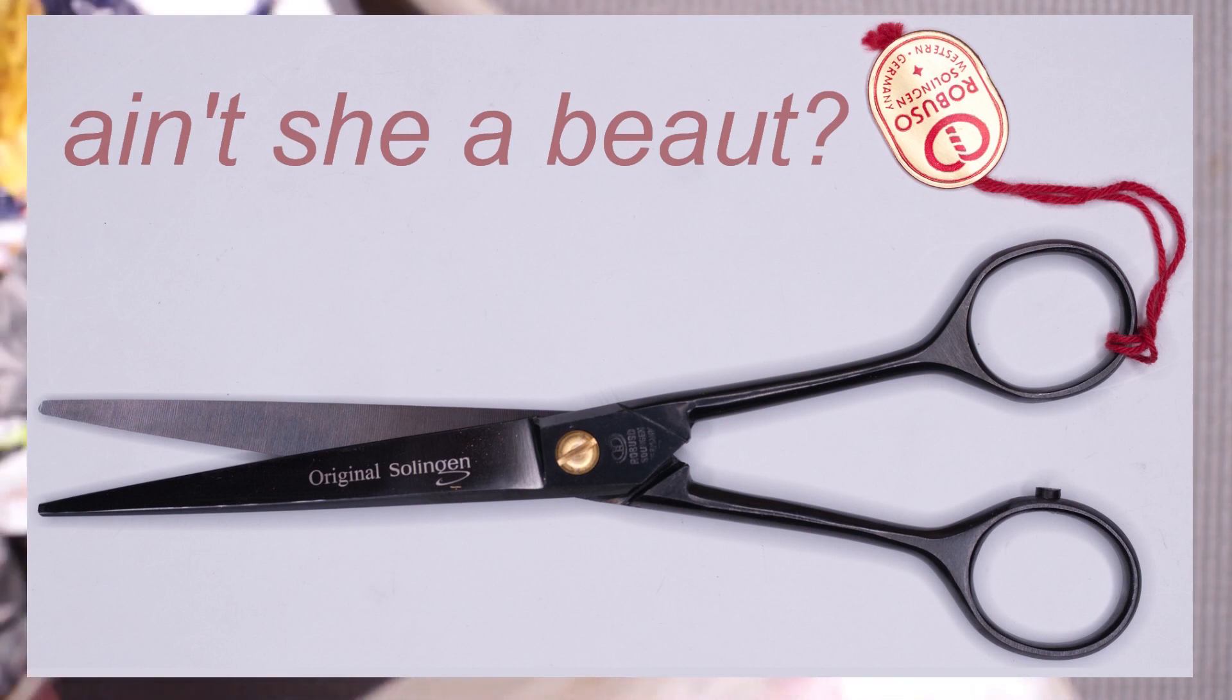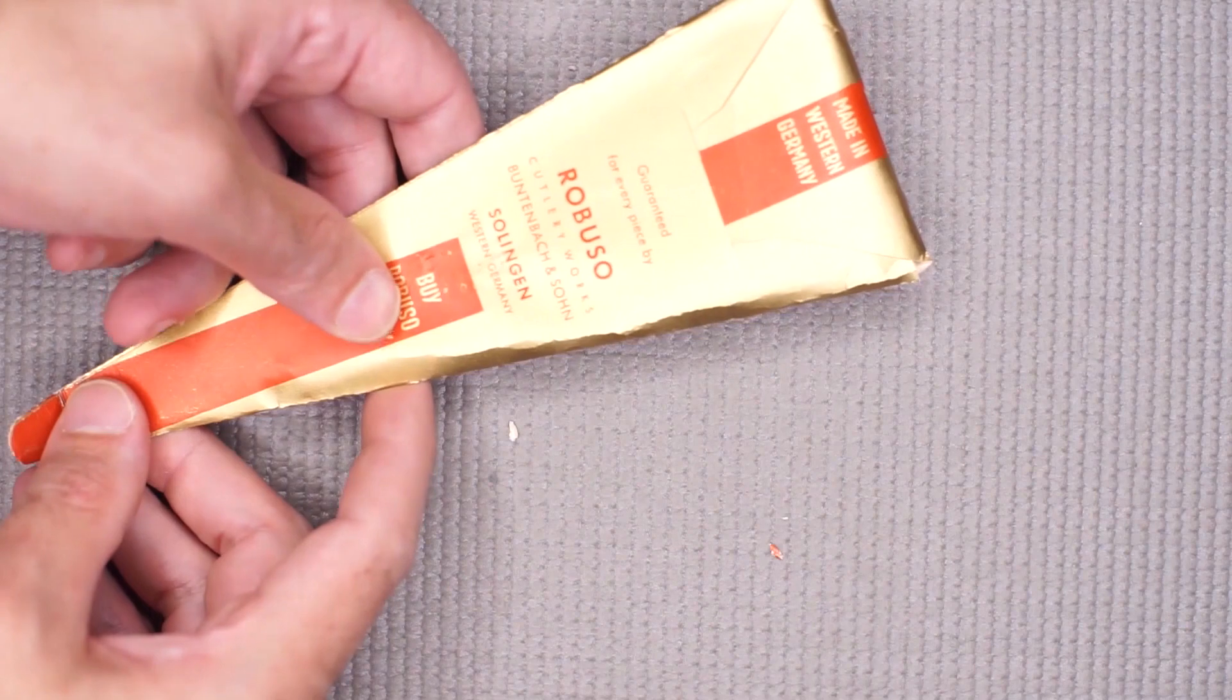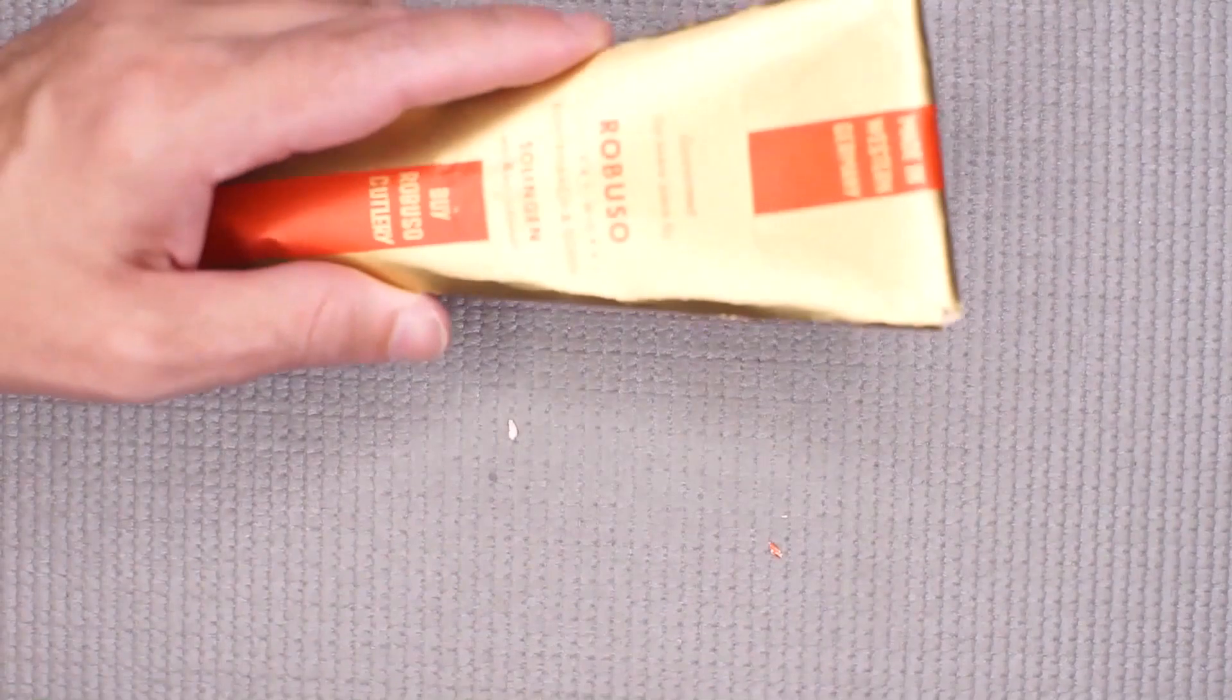It's going to be called Robuso, and it is a seven-inch carbon steel. Historic forgings, probably from the 80s. Robuso Salingen, Bundenbach & Zollm Cutlery works, Western Germany. Buy Robuso cutlery.